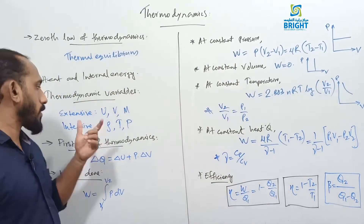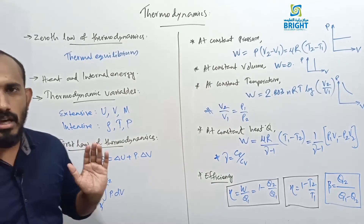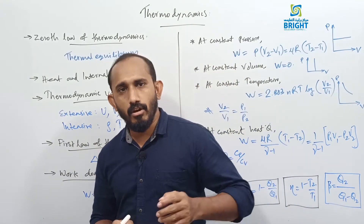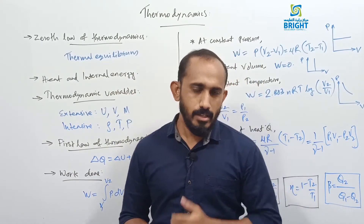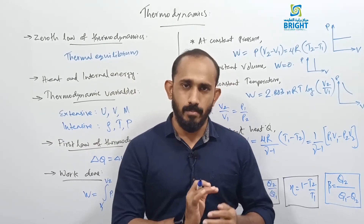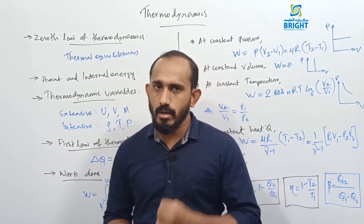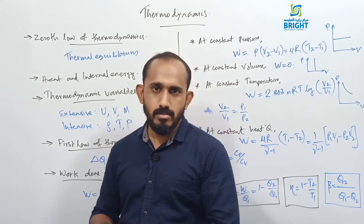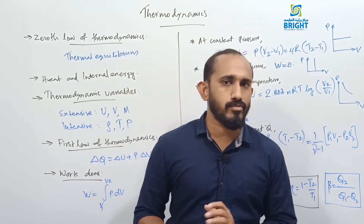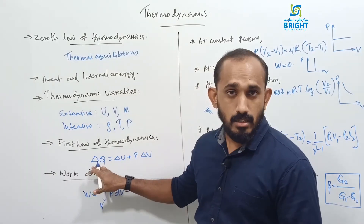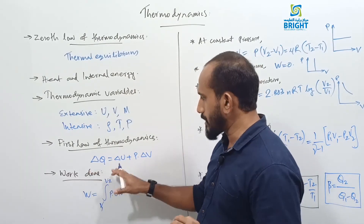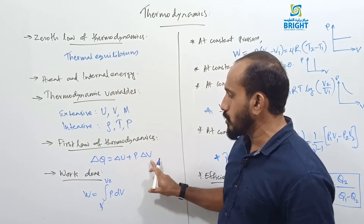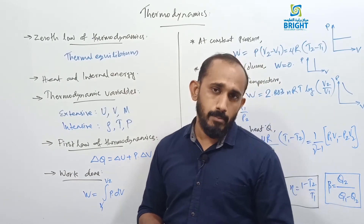The relation between internal energy and heat is given by the First Law of Thermodynamics — another form of the law of conservation of energy. It states that the total heat supplied to a system is used for two purposes: to increase its internal energy and to do useful work. So delta Q equals delta U plus delta W, where work done can be expressed as pressure times change in volume, P delta V.